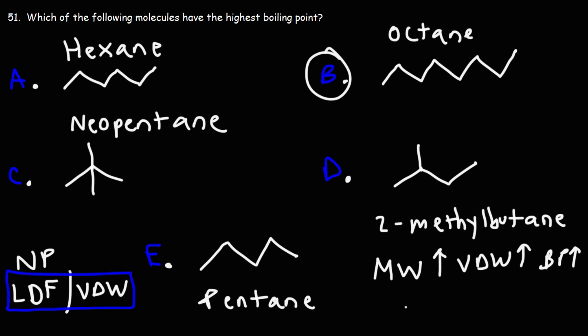Now what about branching? When you have branching in the case of neopentane, the area of contact, or you can think of it as a surface area, it decreases. And with less area of contact, you have less Van der Waals Forces. And so the boiling point goes down.